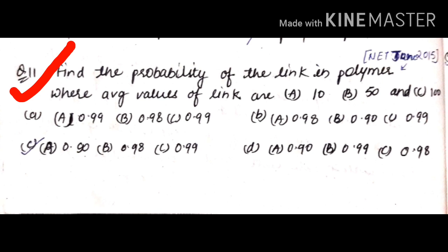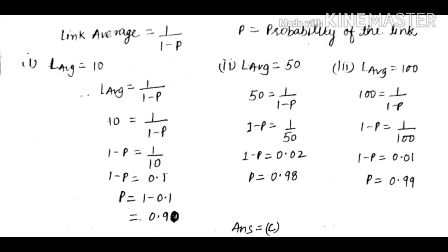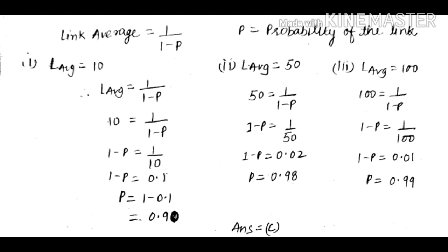Find the probability of the link in a polymer where average values of link are: a) 10, b) 50, and c) 100. In a previous video on polymer chemistry, I told you that link average is equal to 1 upon (1 - p), where p is the probability of the link. So here we will find the probability of the link when the link average is given.